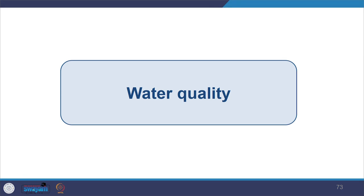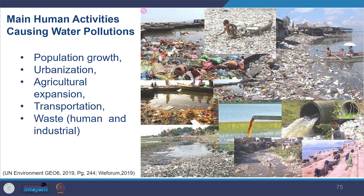Now we will look at concerns of water quality. Looking at the main human activities: water quality is influenced by the natural system, but primarily we look at human activities such as population growth, urbanization, agriculture expansion, transportation, and human and industrial waste, and how these pollute the water.